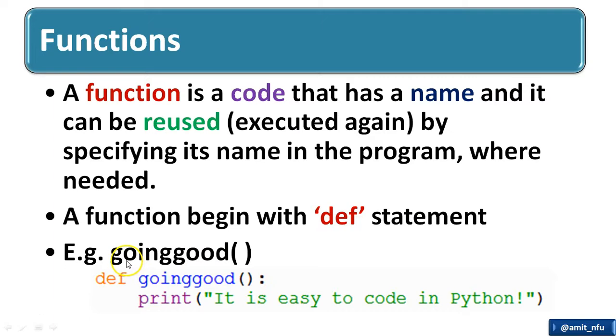Now for example in our code, going good followed by braces is a function. It begins with def, going good a function, then in that function this particular line that it is easy to code in Python is being printed.